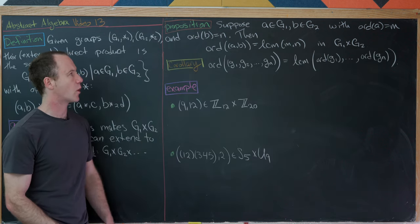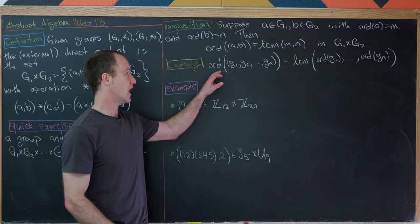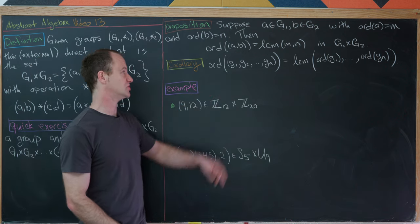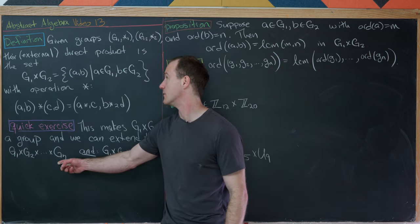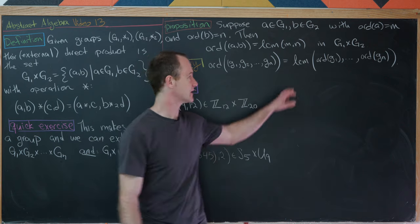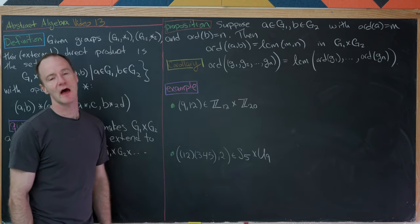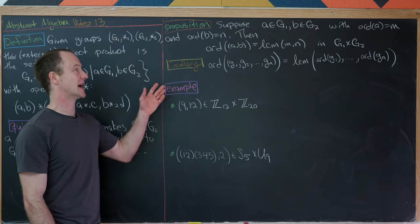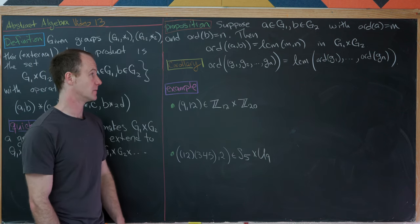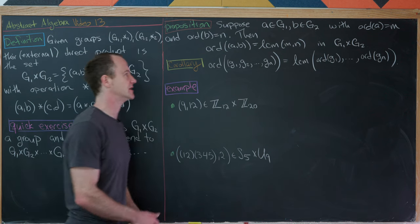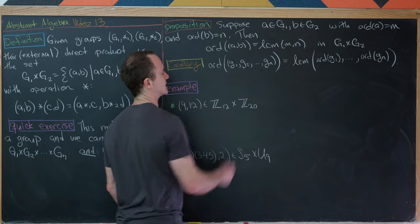There's a quick corollary: the order of an element (g1, g2, ..., gn) in an n-fold direct product is the LCM of all the individual orders. You can prove this by induction, partitioning one factor off at a time.